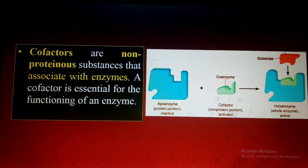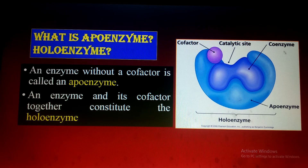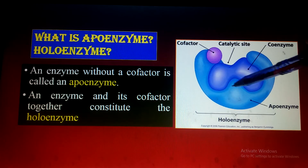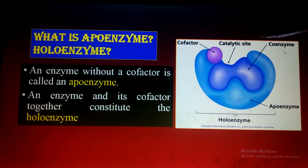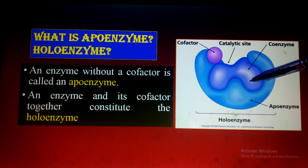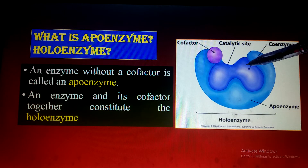What is the apoenzyme and holoenzyme? An enzyme without a cofactor is called an apoenzyme. If there is no cofactor attached with the enzyme, that portion is known as the apoenzyme. An enzyme together with its cofactors and coenzyme is known as the holoenzyme.